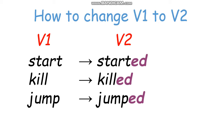So here we have verb one and verb two. Verb one: start, kill, jump. And verb two: started, killed, jumped. That's called verb two.